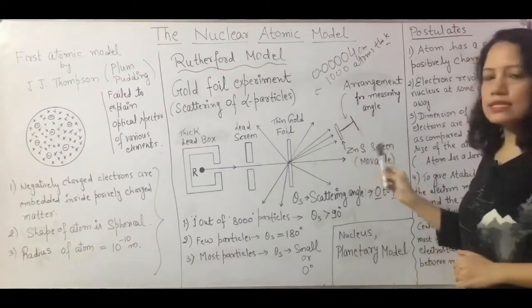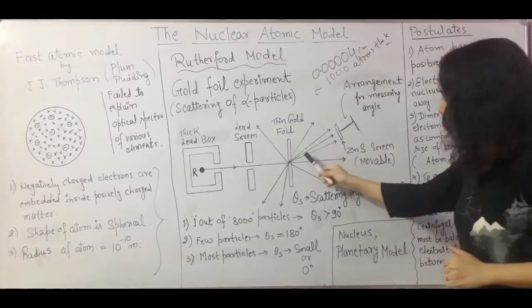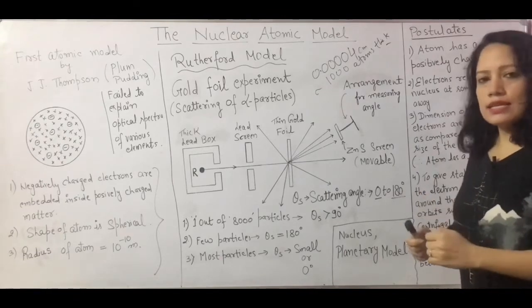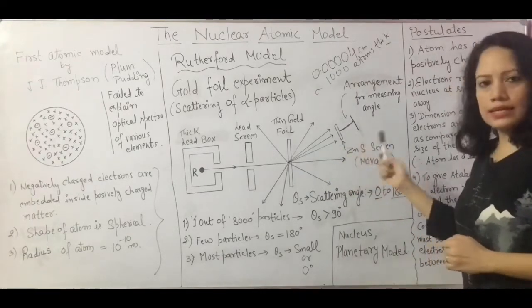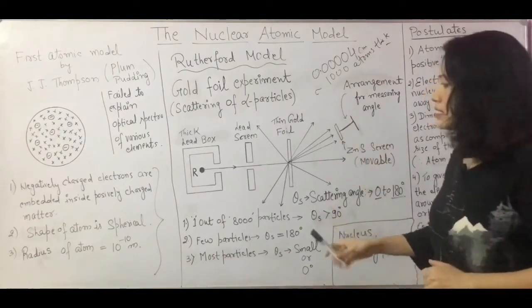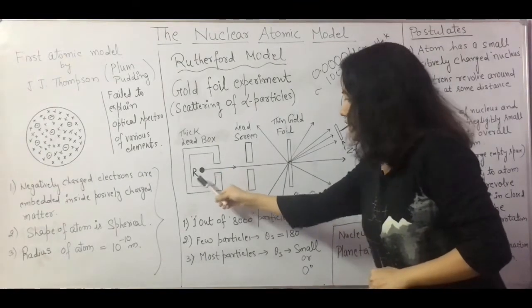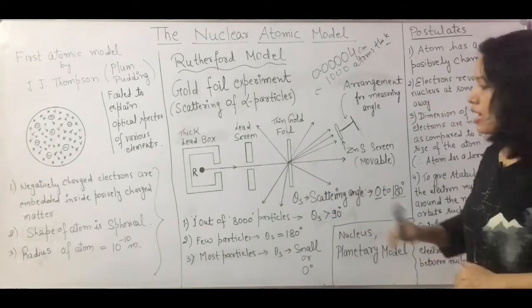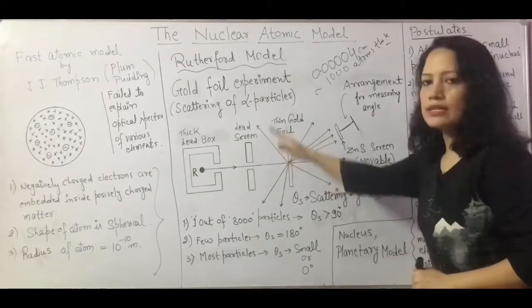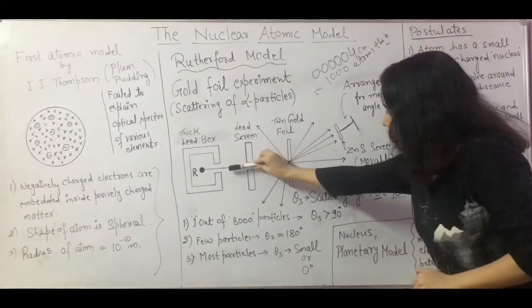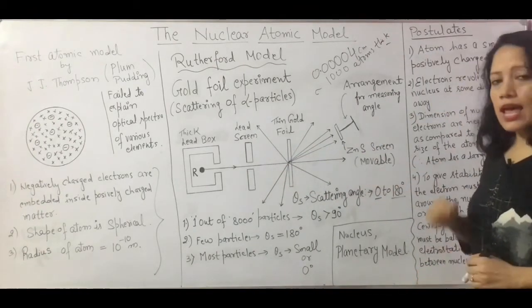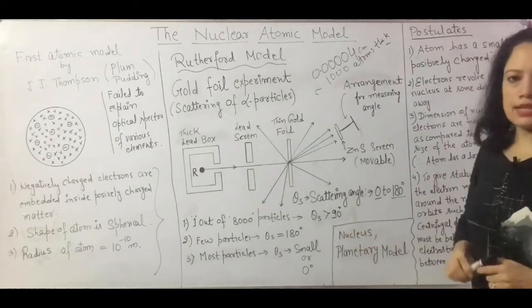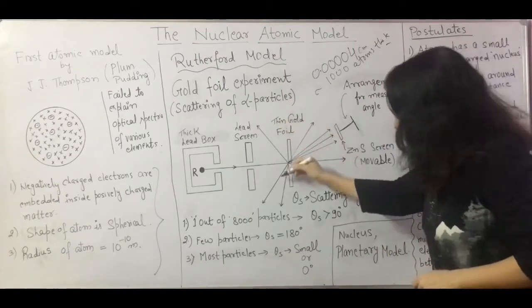The zinc sulphide screen was used because whenever alpha particles fall on zinc sulphide a glow is produced, making it easy to detect that alpha particles have interacted with the screen. In this experiment the alpha particles were emitted from the radioactive substance, collimated by the lead screen, and fell on the thin gold foil. After falling on the foil the alpha particles got scattered in different directions.